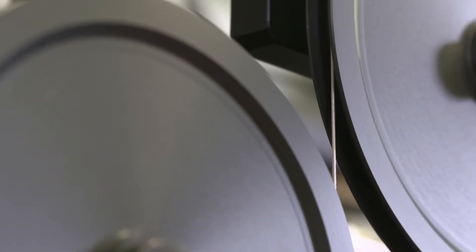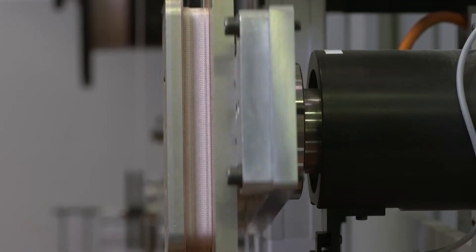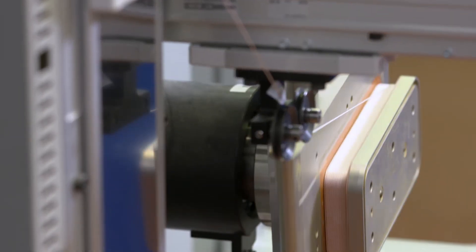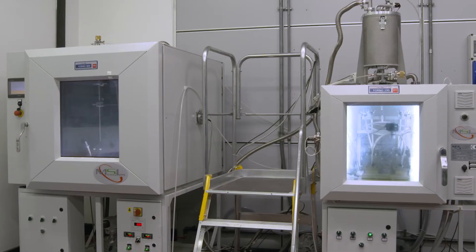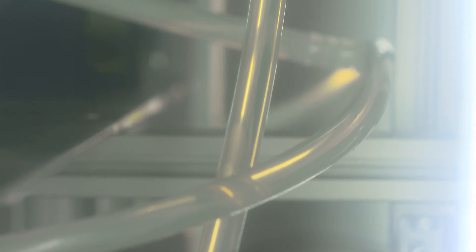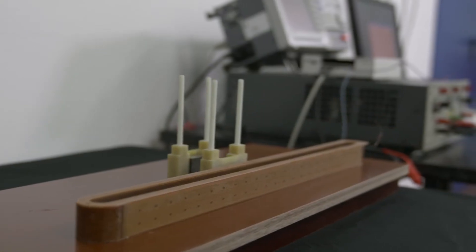Coils are produced by precisely winding the superconductive wire around the supporting structure, which is then impregnated under vacuum with a suitable resin. Finished coils are then metrologically inspected and electrically tested.